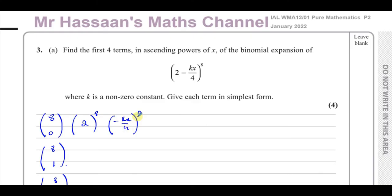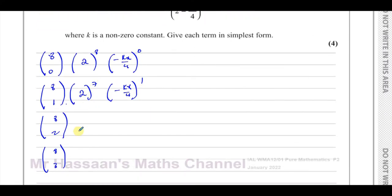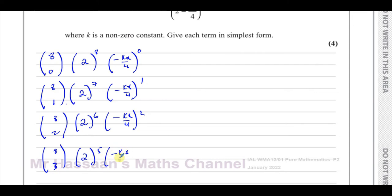I want ascending powers of x, so I start with the x bracket at power 0 and the 2 at power 8. As the power of 2 decreases — to 7, then 6, then 5 — the power of (minus kx over 4) ascends: 1, 2, 3. So the four terms use powers 0, 1, 2, and 3 for (minus kx over 4).